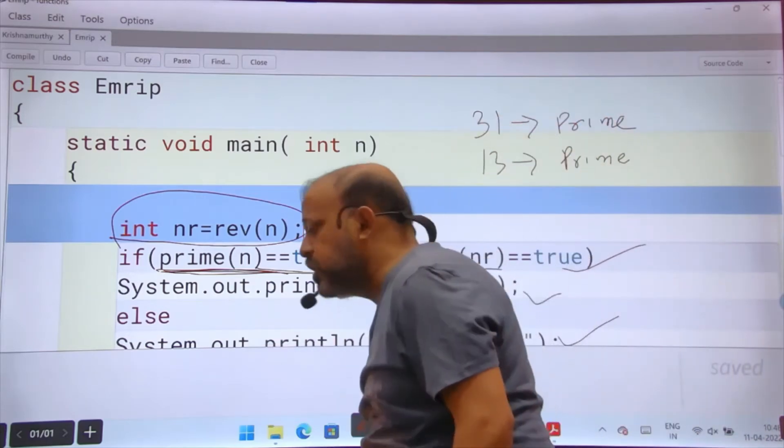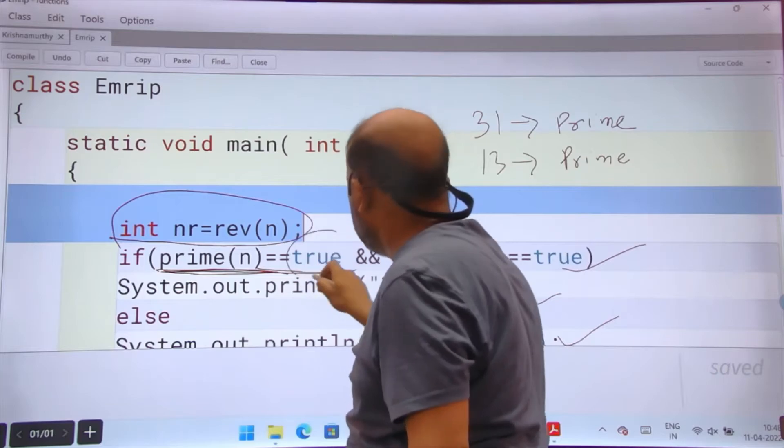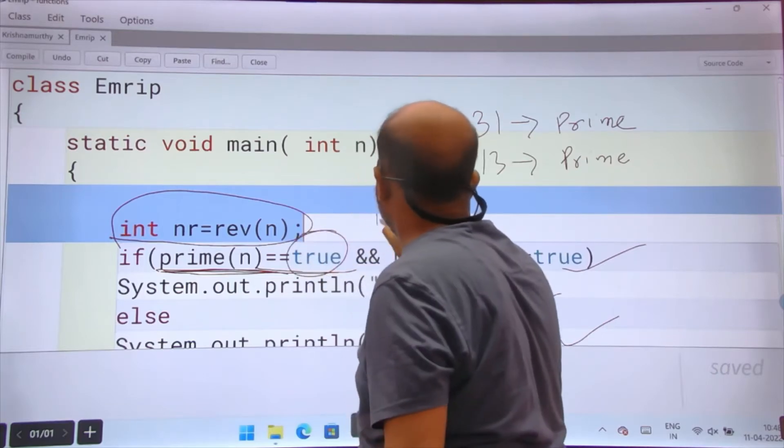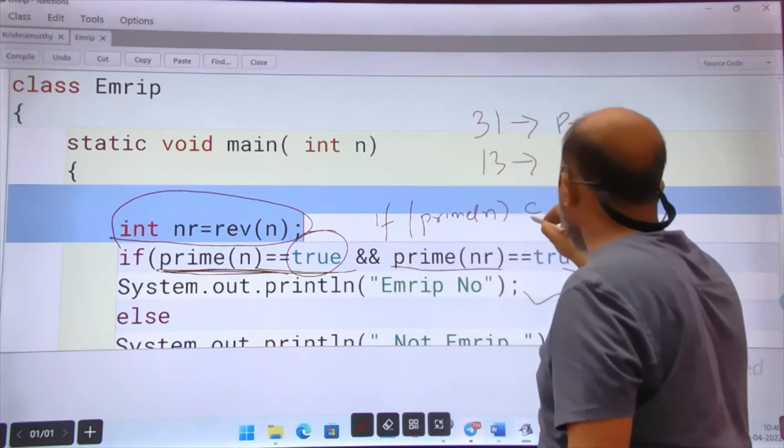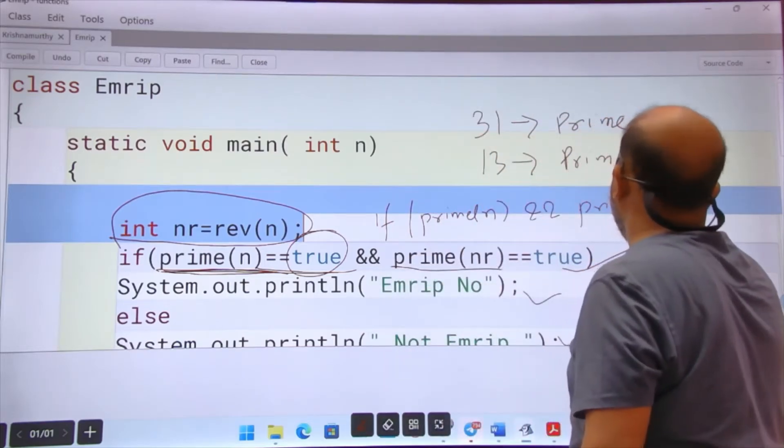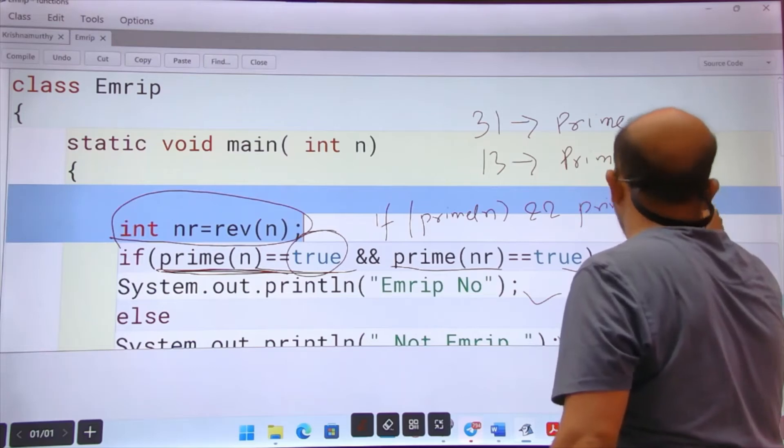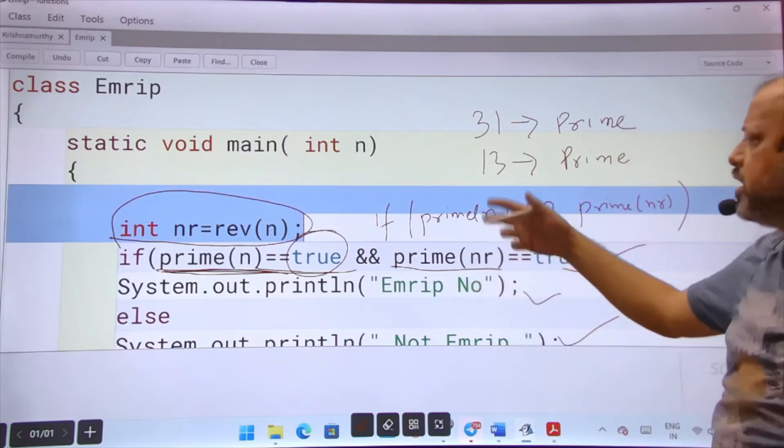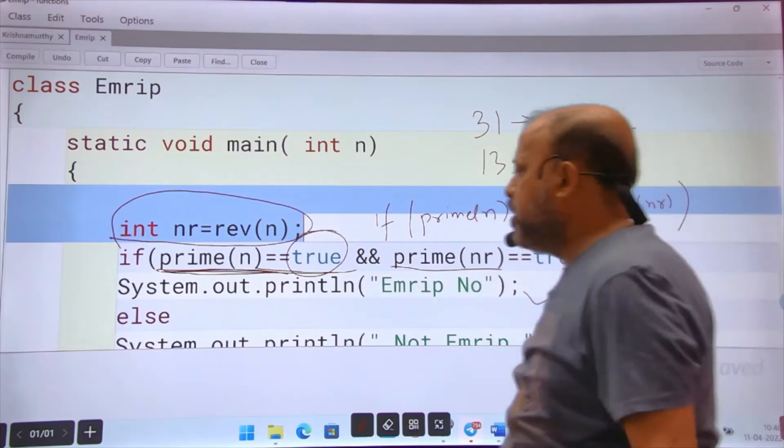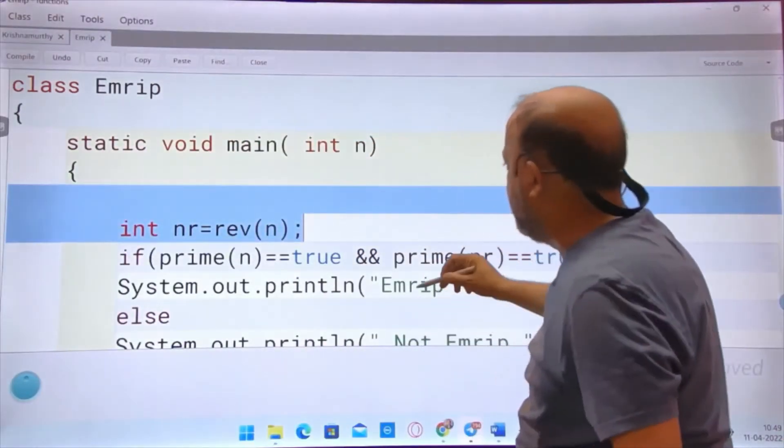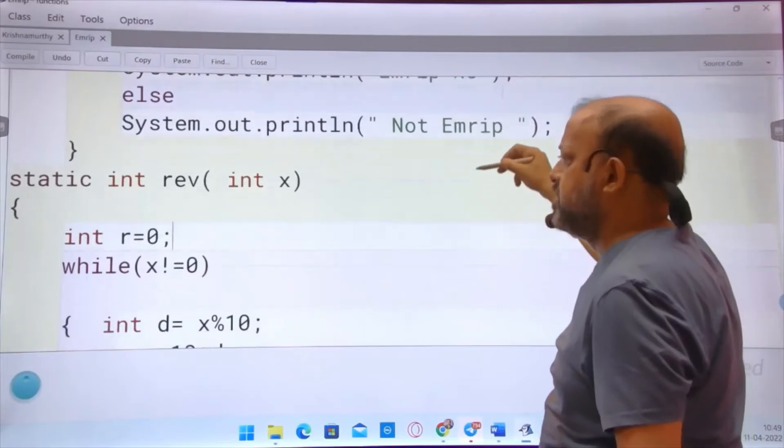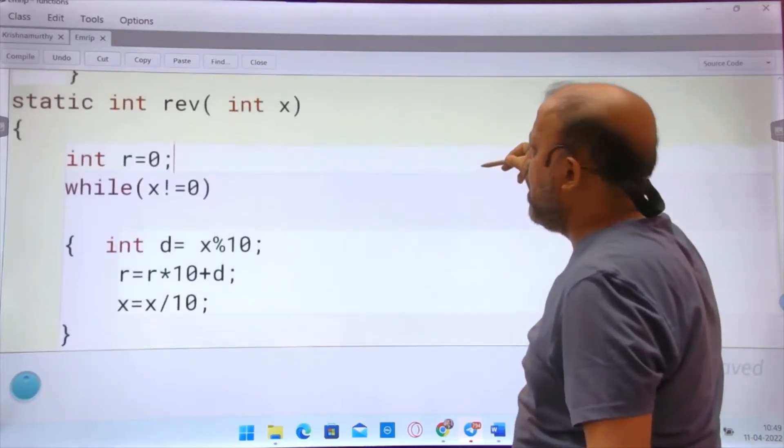So it is returning true, then it is an Emirp, otherwise it is not an Emirp number. Now here when you are returning a boolean, it is not necessary to write this true. You can write simply if prime n and prime nr true. Now let us go to the definition part, both the functions I have defined.